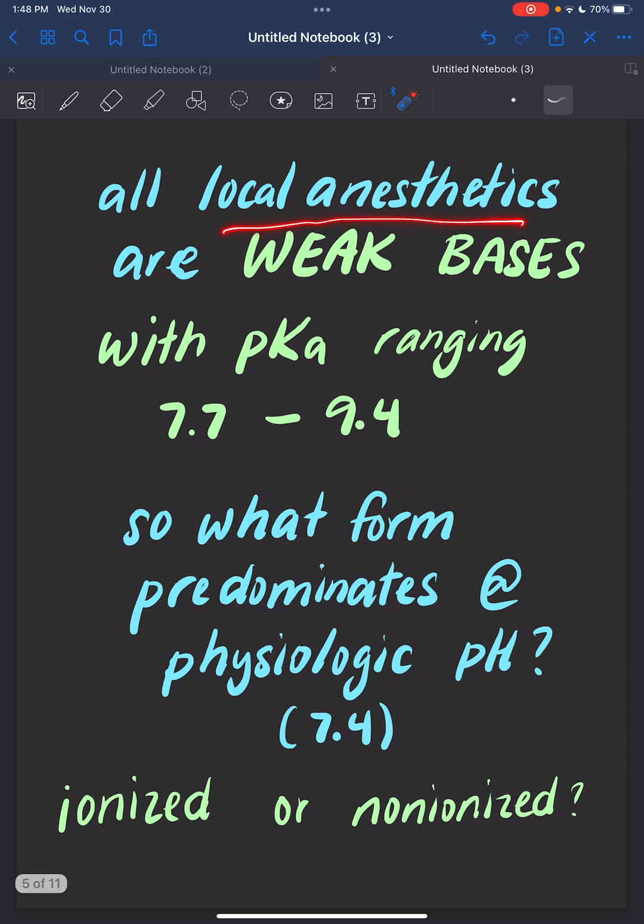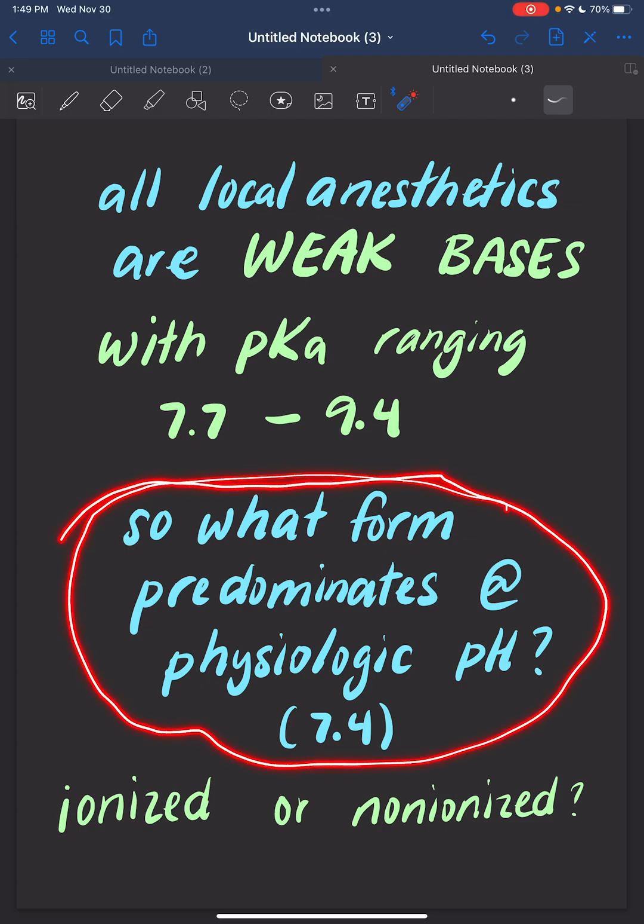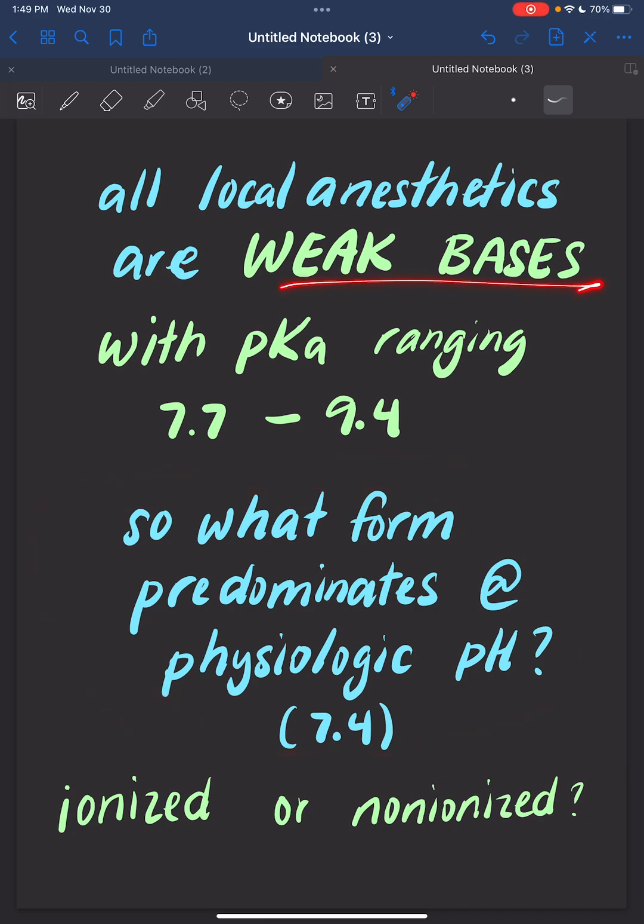All local anesthetics are weak bases with pKa ranging 7.7 to 9.4. I know we're injecting into tissue pH, but let's pretend our tissue pH is 7.4. What happens when we inject a weak base with pKa 7.7 to 9.4 into a physiologic pH environment like 7.4? Does the ionized or non-ionized form predominate?